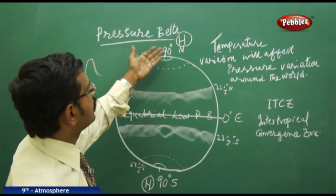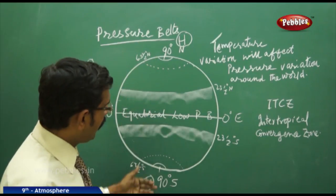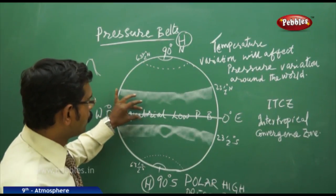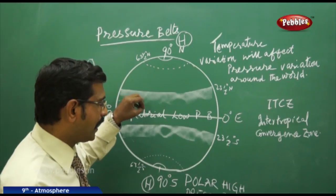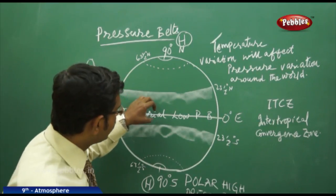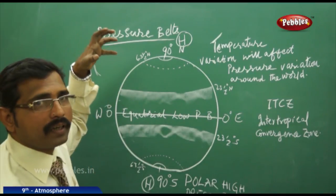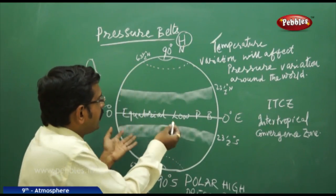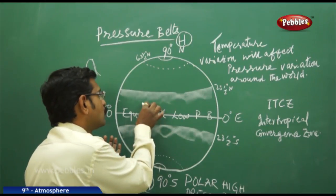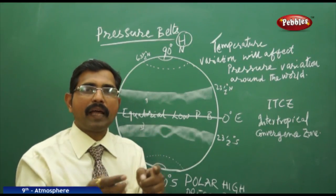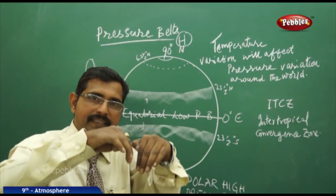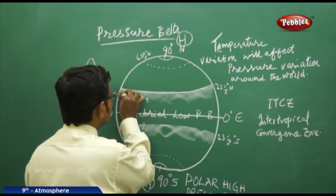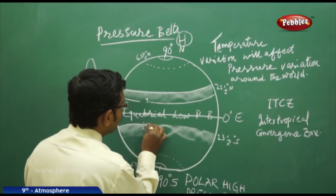The north pole belt is high pressure and the south pole belt is high pressure. At the equator, molecules are heated by intense solar radiation and go upward. They then take a different direction, moving towards the south and north. Once they cool down, they sink back to the earth's surface, forming the subtropical zone with high pressure.